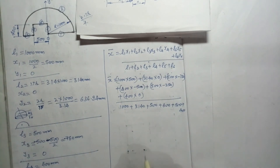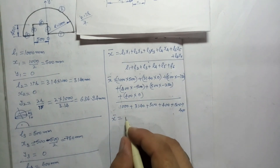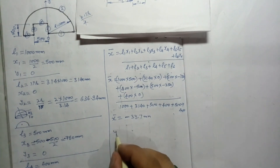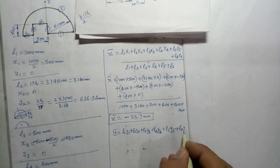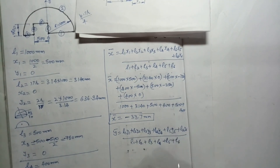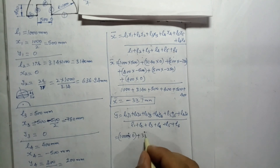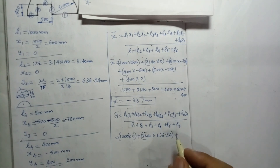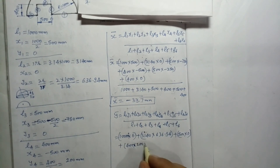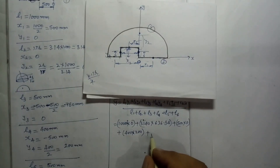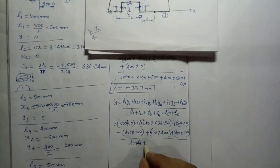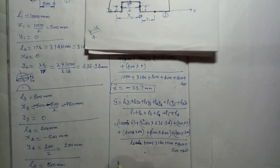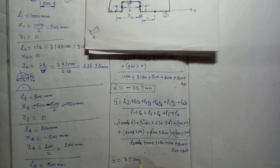After calculating, x̄ = −33.7 mm. Similarly, solving for ȳ using the same weighted-length formula, we get ȳ = 397 mm.